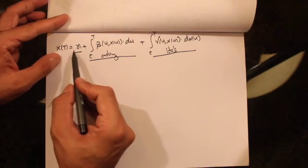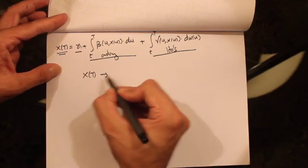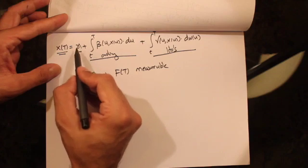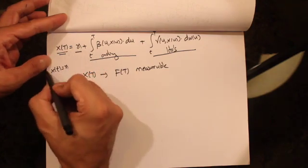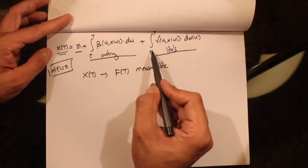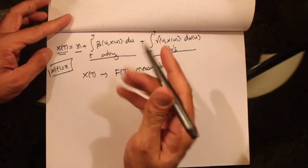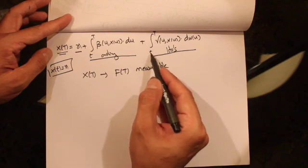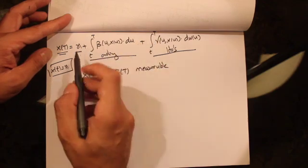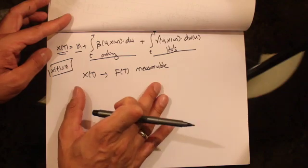Since we are given an initial condition, x(t) is F_t-measurable. Given the value of x(t) = x, in order to compute x(T) we only need the initial condition and the parts of the Brownian motion between times t and T. We don't care about the Brownian motion between 0 and t because we are already given x(t) = x. That's the first thing to understand.